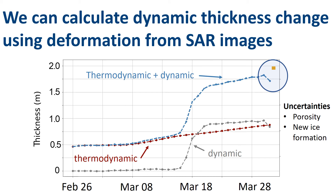This underestimation is most likely explained by the simplicity of our model. First, we didn't consider the porosity of the ice — ridges forming in that area have higher porosity than the level ice we assumed, which would increase total thickness. Second, our model didn't consider new ice formation during subsequent divergence events. A sensitivity study found that this effect can explain the deviation of about 30 centimeters between modeled and observed thickness.